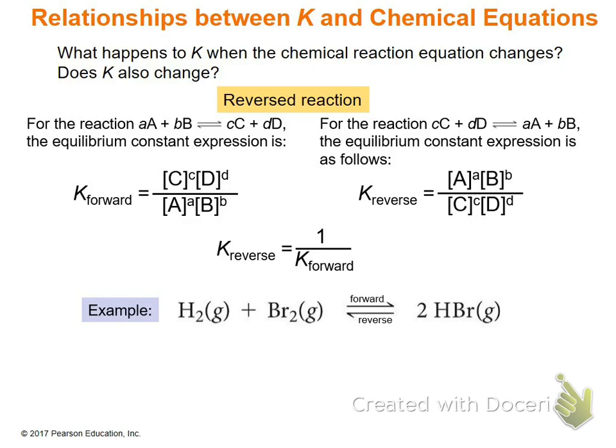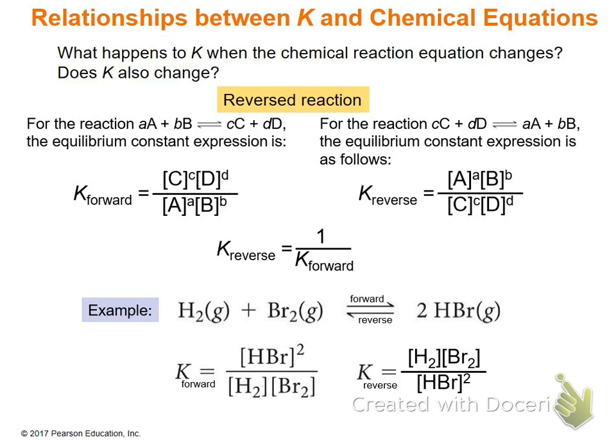For example, for a forward reaction, you write K as the concentration of products raised to the second power divided by the concentrations of the reactants. The reverse reaction's K is simply the inverse: 1 over K_forward.